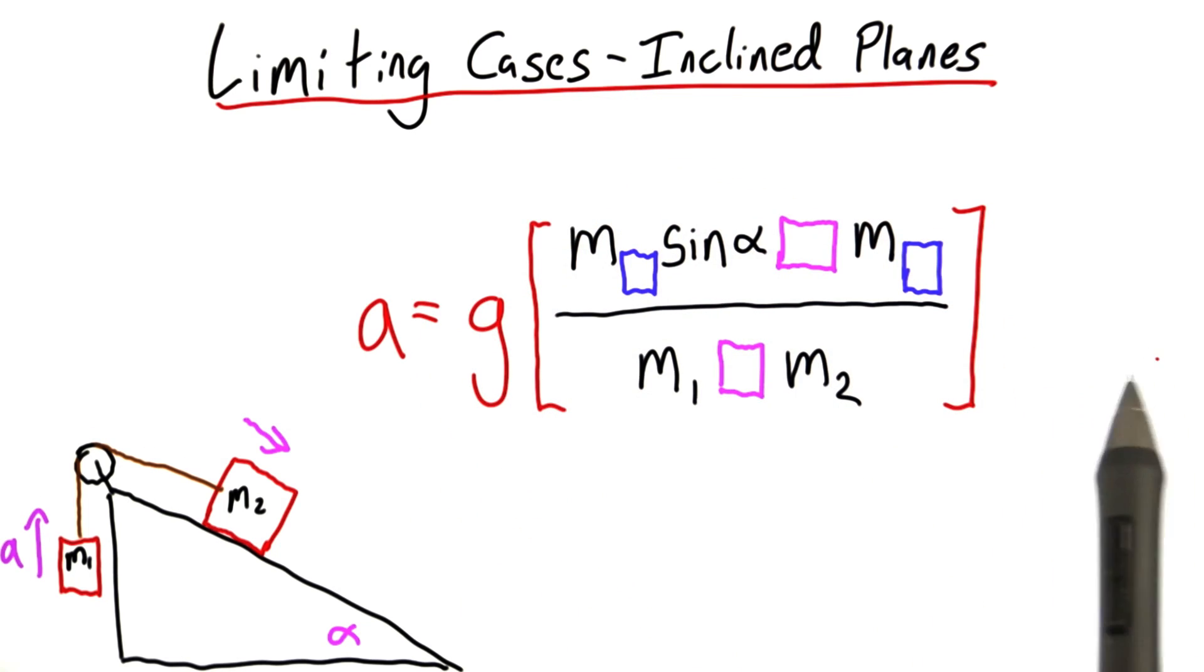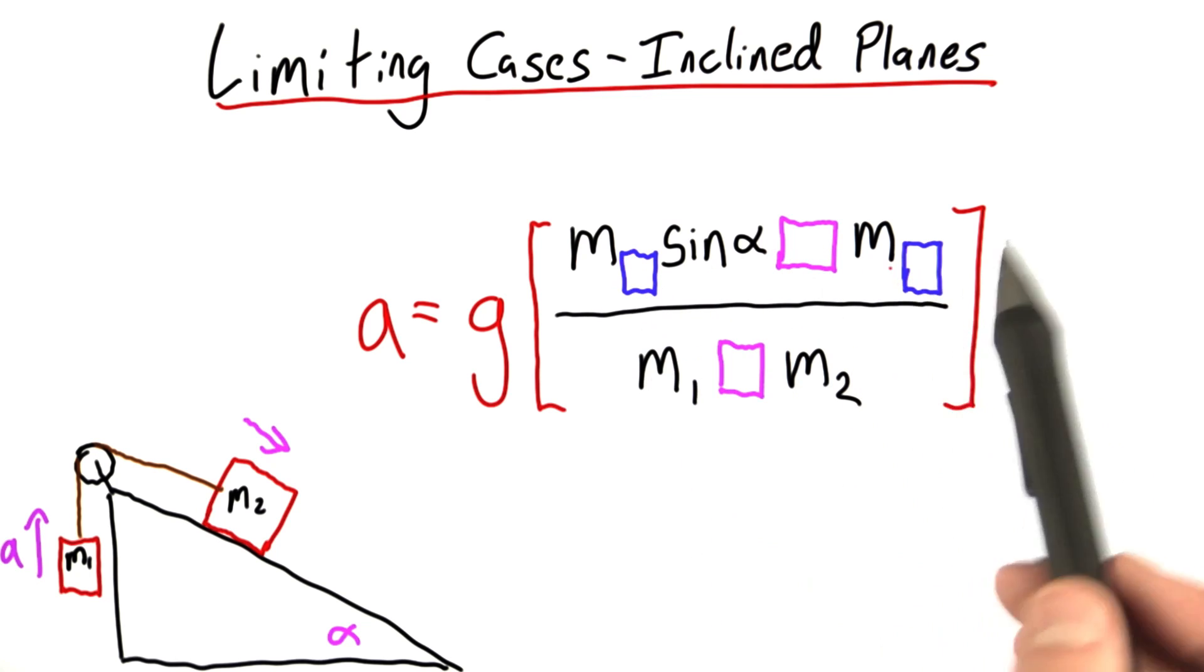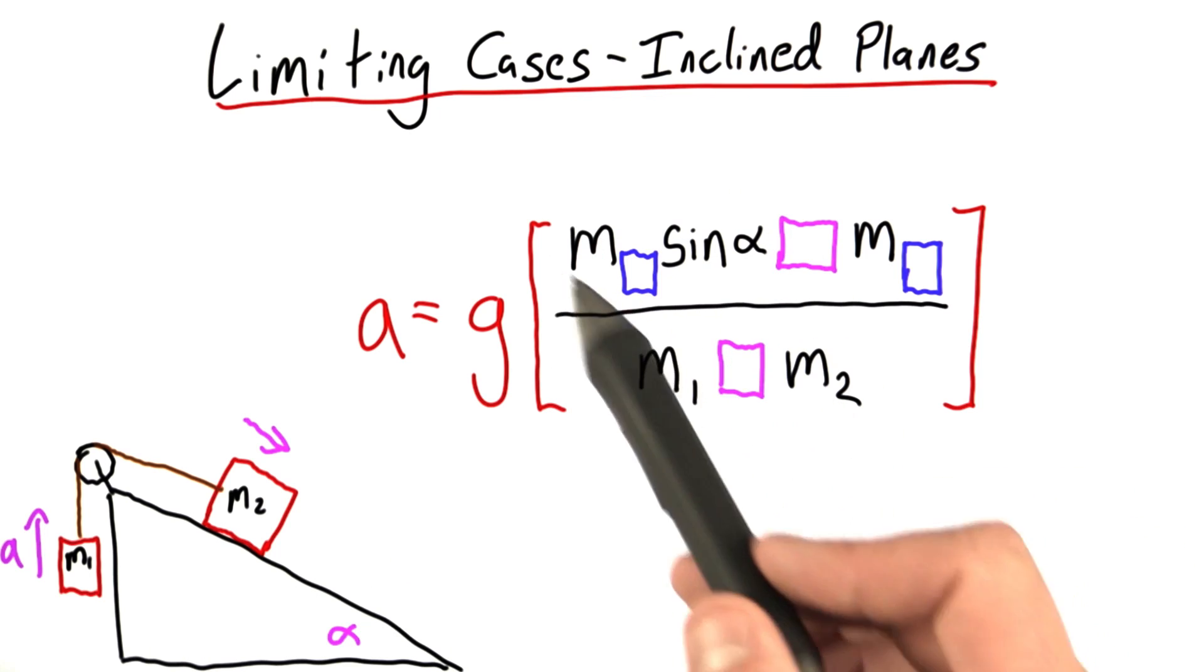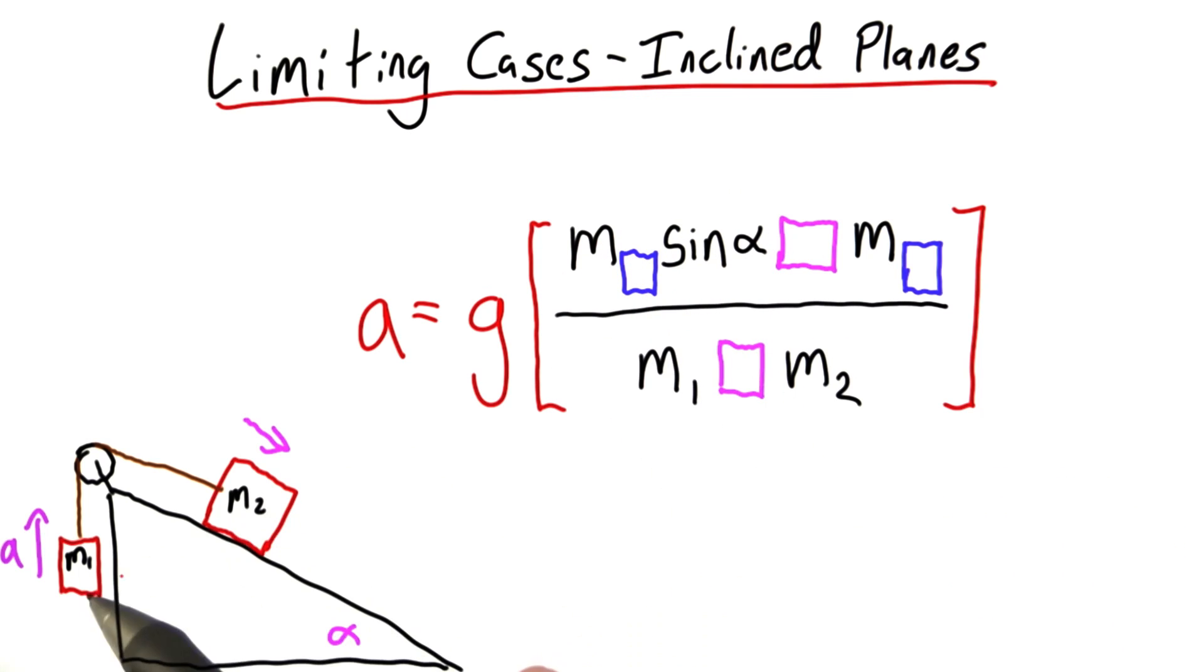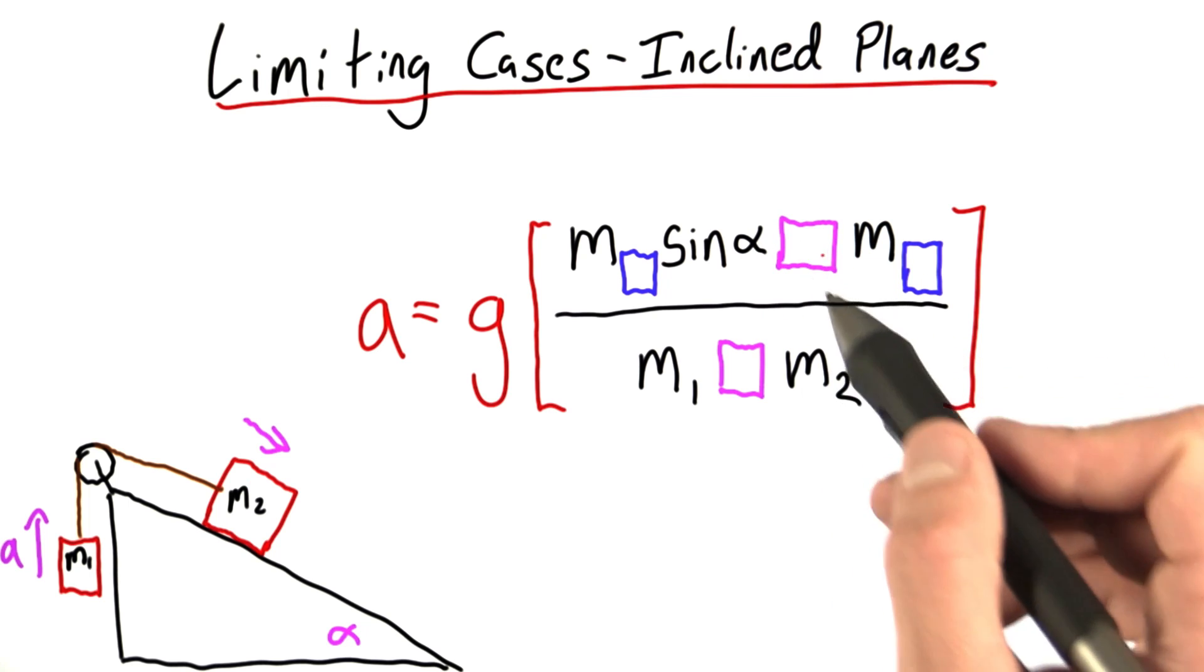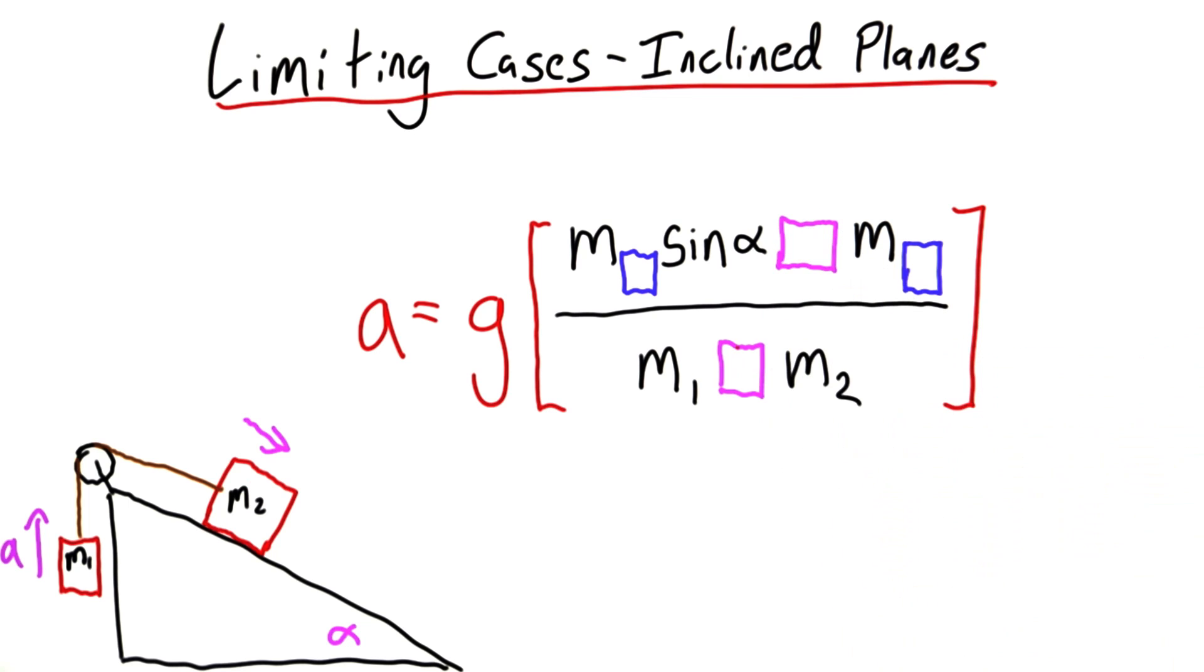Now, the way you're going to solve this question is by filling in these four boxes. The blue boxes you'll fill in with either a 1 or a 2 to indicate whether the appropriate mass in that section of the equation is mass 1 or mass 2. The purple boxes you'll fill in with a plus sign or a minus sign.